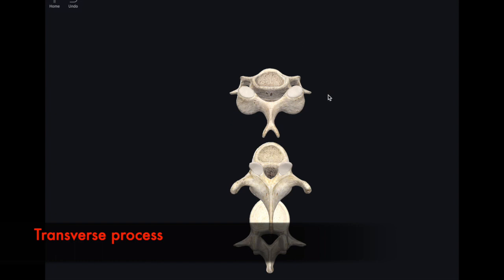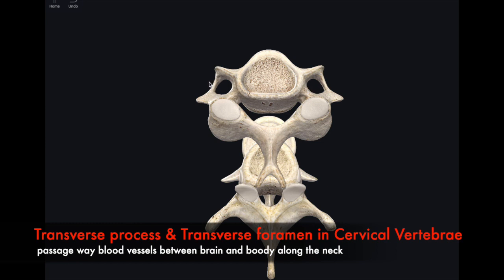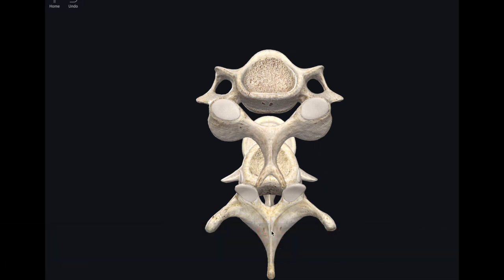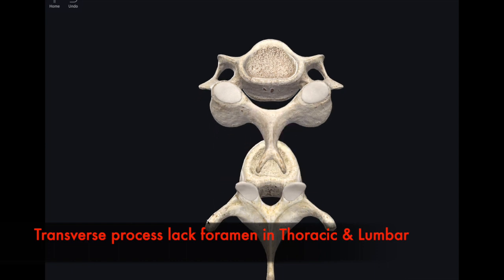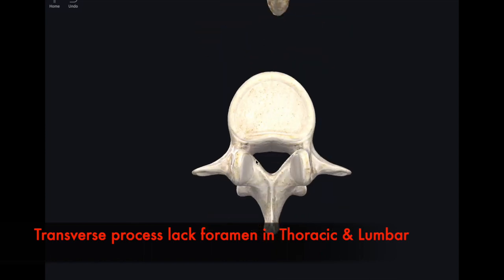Looking from the superior aspect, we notice processes sticking out on the sides called the transverse process. In the cervical vertebrae these contain transverse foramina, which allow blood vessels to pass between the brain and the rest of the body — a major distinguishing feature of cervical vertebrae. The thoracic and lumbar also have transverse processes, but they lack these transverse foramina.